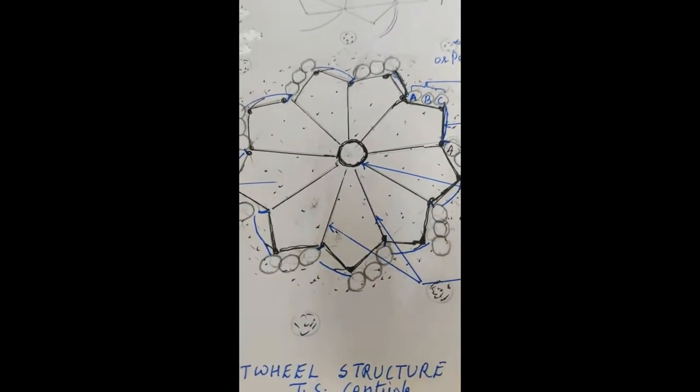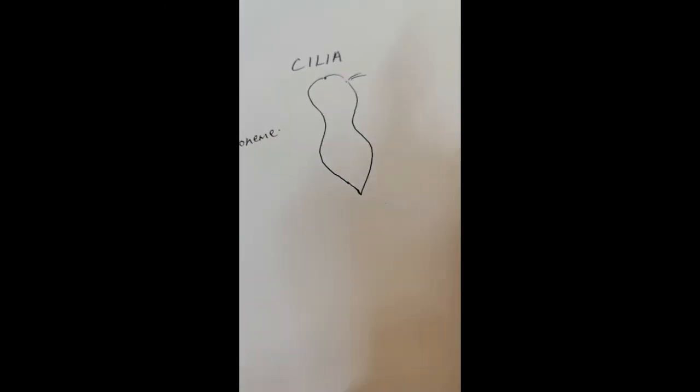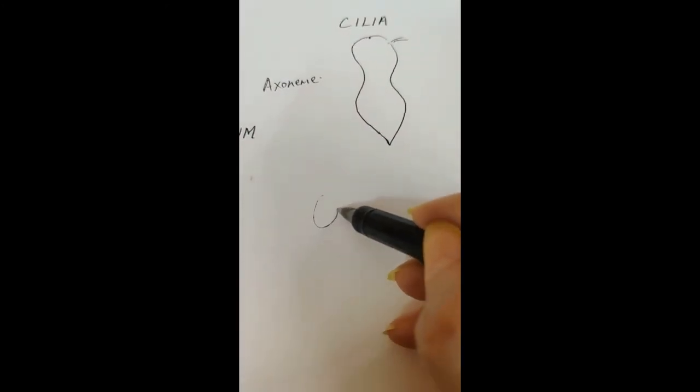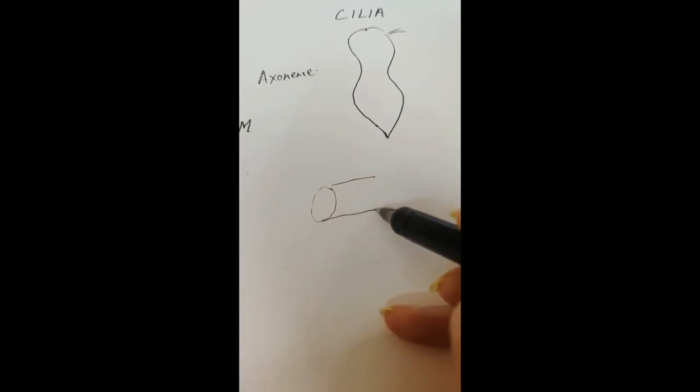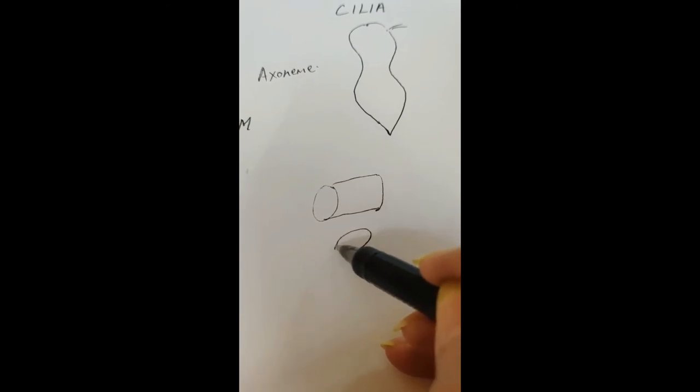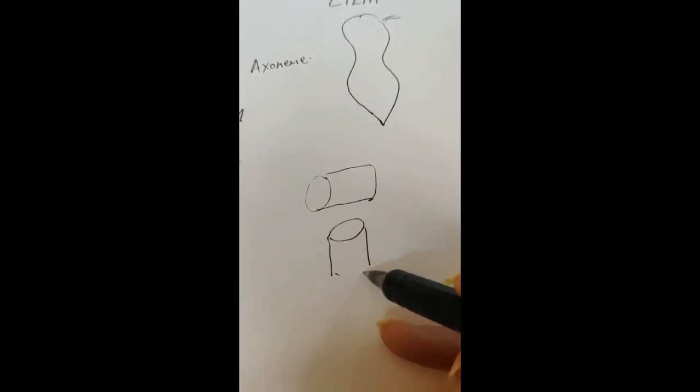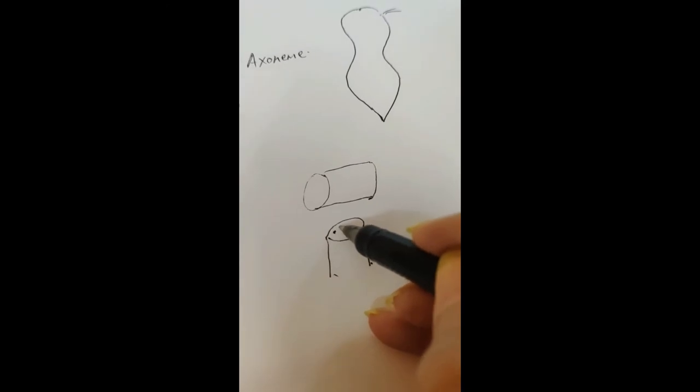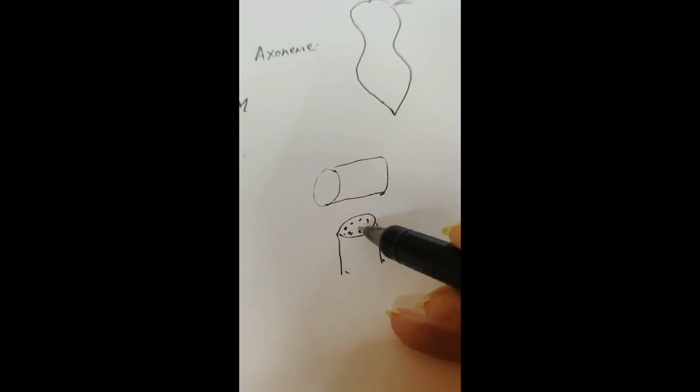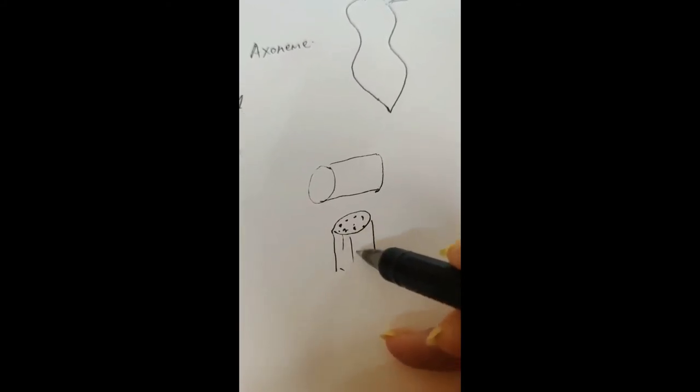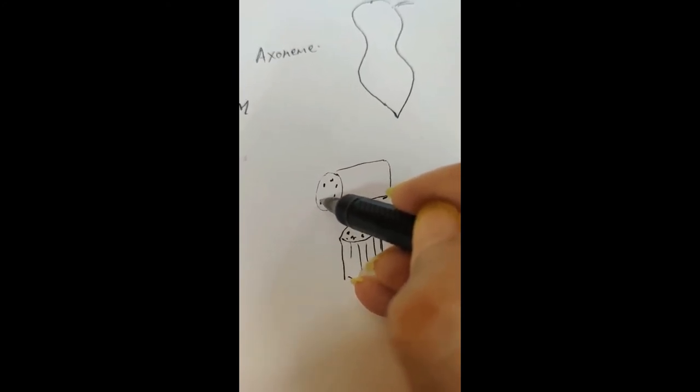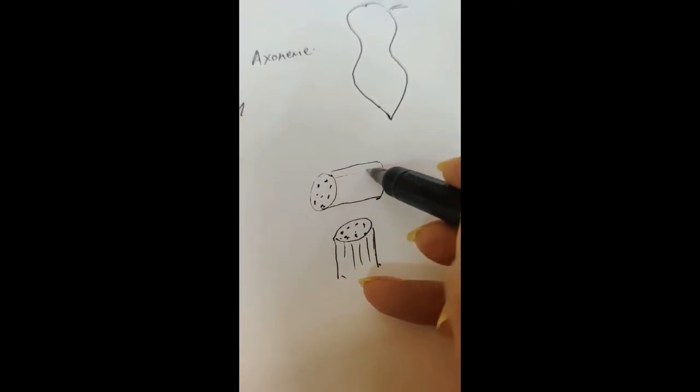Now this centriole actually looks like something like this. So if this is one centriole, then the second centriole would be lying at right angle to it, and inside this you will see these 9 peripheral fibers with the central hub. So they will run throughout the length. Similarly here also, 9 peripheral triplets and they run along the length.